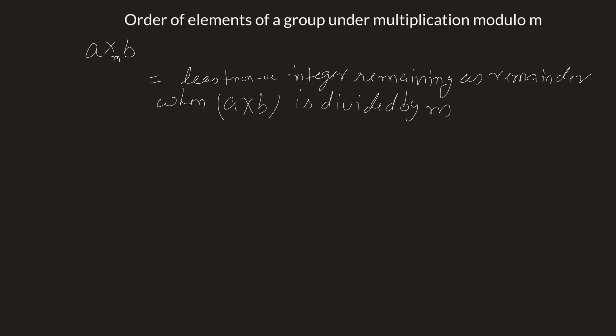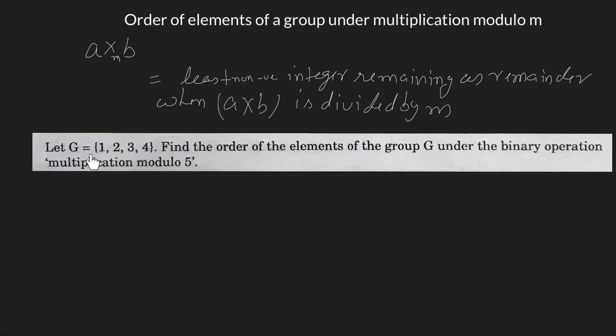This is the definition of multiplication modulo M. Now let us consider a problem. The statement is: let G equal to {1, 2, 3, 4}. Find the order of the elements of the group G under the binary operation multiplication modulo 5.